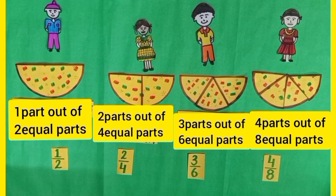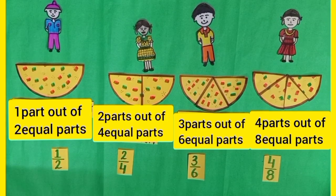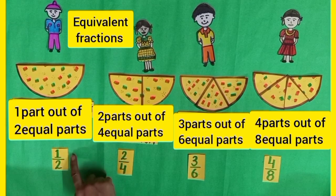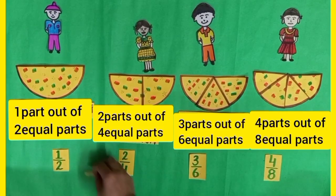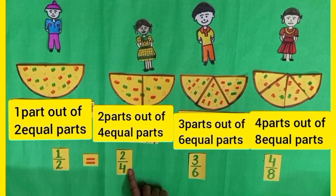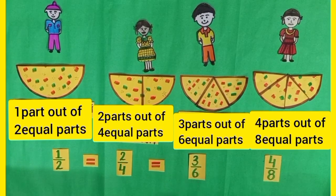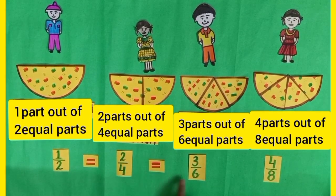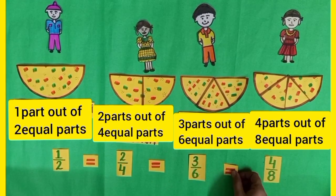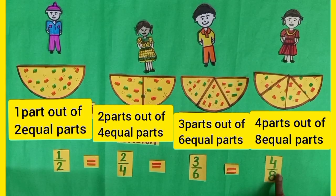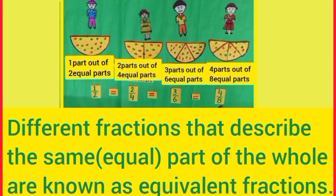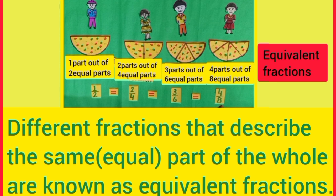Dear students, the different fractions which describe the same part of the whole are known as equivalent fractions. So, one upon two is equal to two upon four, and two upon four is equal to three upon six. Similarly, three upon six is equal to four upon eight. So, dear students, these fractions are equivalent fractions. In this way, we have learned that different fractions that describe the same or equal part of the whole are known as equivalent fractions.